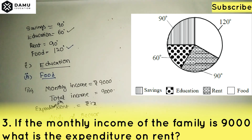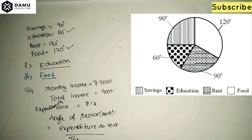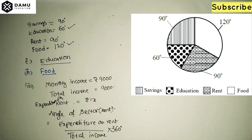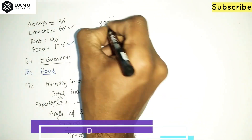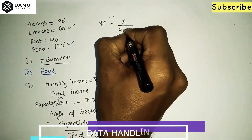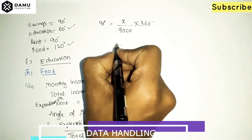The formula is: angle of sector = (expenditure on that item / total income) × 360 degrees. So for rent: angle of sector for rent = (expenditure on rent / total income) × 360 degrees. Total income corresponds to 360 degrees. So 90 degrees = (x / 9000) × 360 degrees.